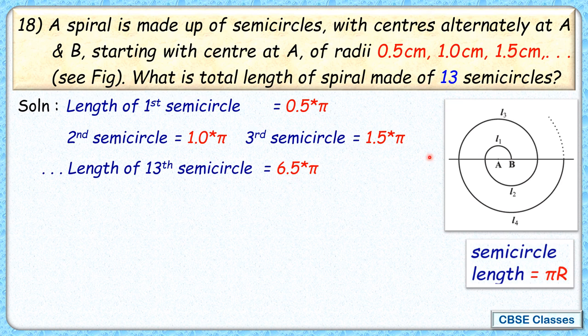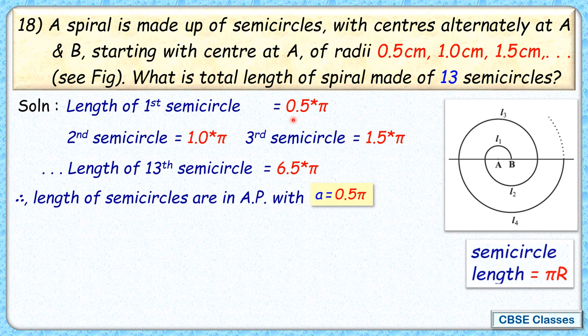The total length of the spiral will be the sum of all these terms. If we see carefully, these are forming an AP because the difference between subsequent terms is constant, that is 0.5π. This is forming an AP with first term as 0.5π and common difference also 0.5π.